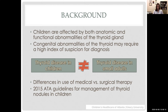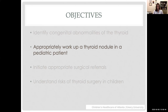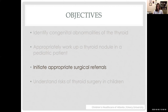Nodules in adults are overwhelmingly benign, but in kids up to a quarter of them might be malignant, so we need to treat them differently. This is also important when educating patients' family members, because many adults know someone treated for thyroid disease in adulthood, but management of a child will be different. Our objectives today are to review common congenital anomalies of the thyroid gland, how to work up a nodule in a pediatric patient, when to think about surgery, and the risks in children — approached through a case-based format.